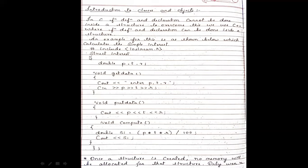The end of the compute function definition marks the end of the structure definition — closed with a flower bracket followed by a semicolon. We declared three variables and wrote three functions: get_data to obtain input, put_data to print details, and compute to find and display simple interest. A program will only run successfully when it has a main function.